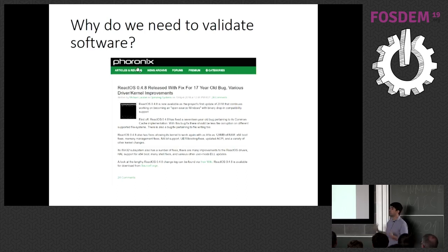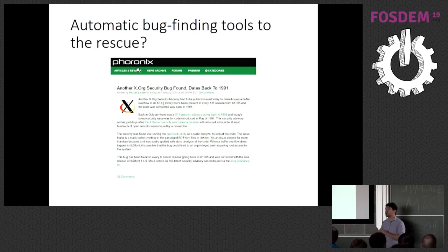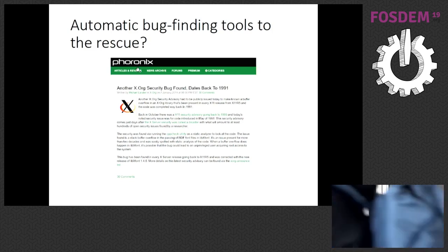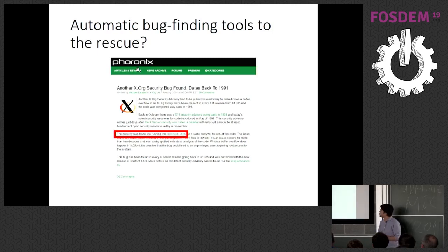These bugs are really hard to spot, so we need tools to actually find them. Automatic bug-finding tools come to the rescue — kind of, not really yet, but we have a lot of good results recently. This one is from 2014: a tool called cppcheck that found a bug that was 13 years old in Xorg.